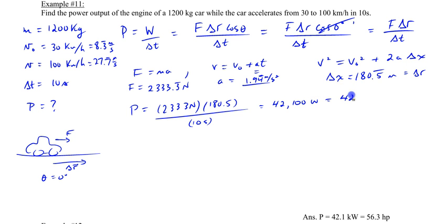Or 42.1 kilowatts, which you could convert to horsepower by multiplying by 1 horsepower over 746, or actually since we're doing kilowatts, 0.746 kilowatts. And that will give you a power of 56.3 horsepower.